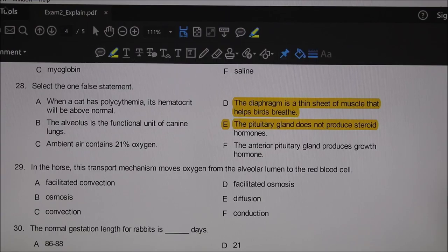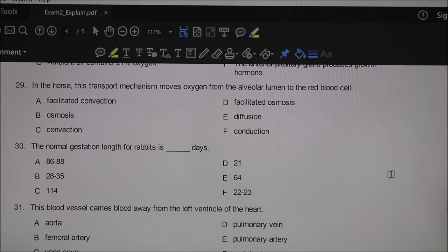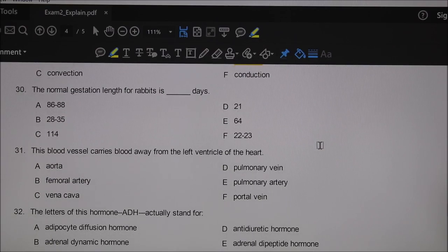Birds do not have a diaphragm, so D is the false statement. Twenty-nine: in the horse, this transport mechanism moves oxygen from the alveolar lumen to the red blood cell. We stated that so many times—diffusion. That's a problem because if that diffusion barrier gets too thick, we don't get oxygen into the blood.